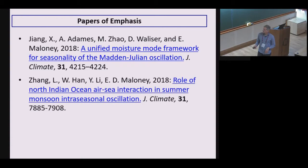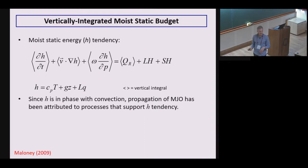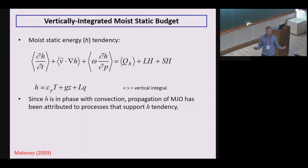The framework I'm going to use is the vertically integrated moist static energy budget. The equation has a quantity h, which is the sum of sensible, potential, and latent heat. This is a tendency equation showing the local tendency, horizontal advection, vertical advection, and on the right-hand side we have radiation, latent heat flux, and sensible heat flux. The brackets represent a column integral from the surface to the top of the troposphere. This equation has been used for a variety of reasons — to study the MJO and BSISO, convective aggregation in the tropics, tropical cyclones, and the tropical mean state.